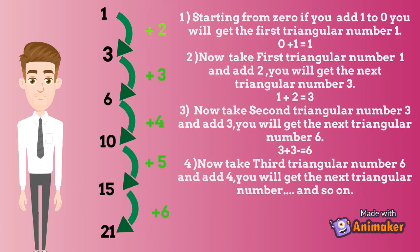Starting from 0: if you add 1 to 0 you will get the first triangular number 1. Now take the first triangular number 1 and add 2, you will get the next triangular number 3. Now take the second triangular number 3 and add 3, you will get the next triangular number 6. Now take the third triangular number 6 and add 4, you will get the next triangular number, and so on.